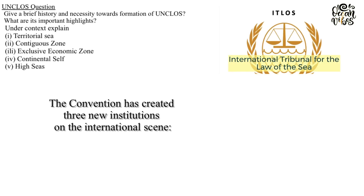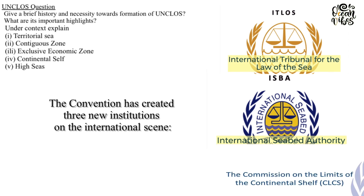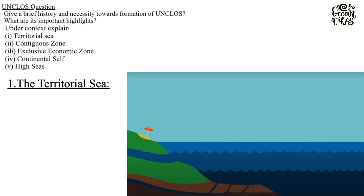The Convention has created three new international institutions: the International Tribunal for the Law of the Sea, the International Seabed Authority, and the Commission on the Limits of the Continental Shelf.